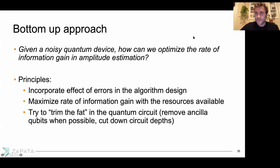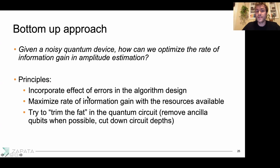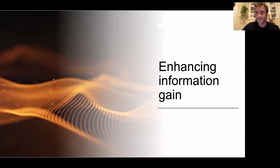Given the previous results, the approach that we took was what we would consider a more bottom-up approach. The question is: given the noisy quantum devices that might be realizing quantum advantage, how can we optimize the rate of information gain in amplitude estimation to drive us towards quantum advantage? The principles we used were to incorporate the effective errors in algorithm design, to maximize the rate of information gain with available resources, and to trim the fat where possible — for example, removing ancilla qubits if they're not necessary.